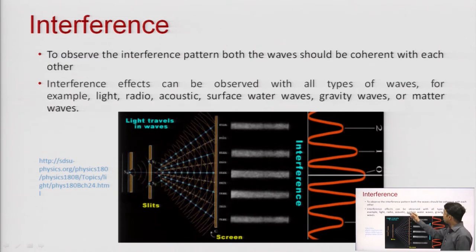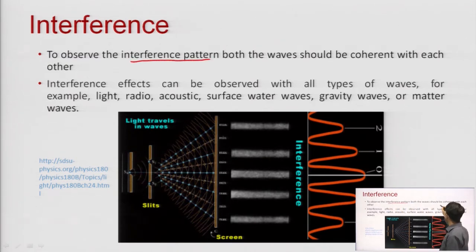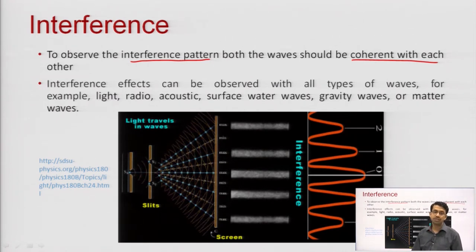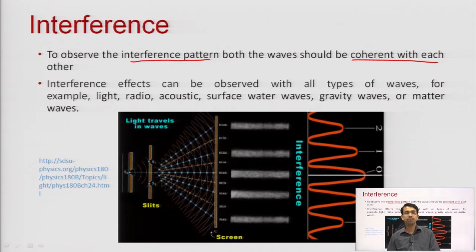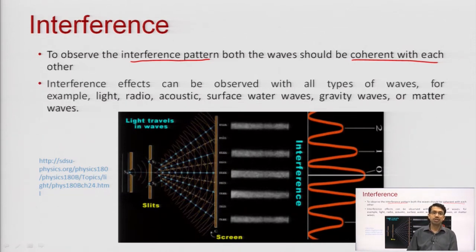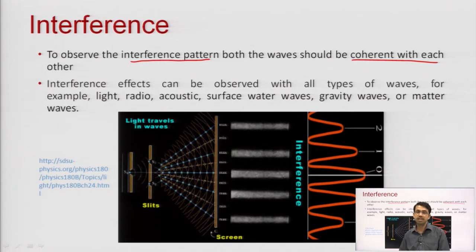To observe the interference pattern, the first condition is that we need coherent sources — two light rays from two highly coherent sources. It is impossible to get 100% coherent light from two different sources, so a single source is used to generate two sources, and slits are used as in Young's double slit experiment.